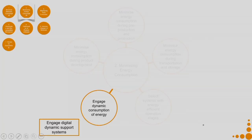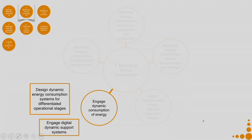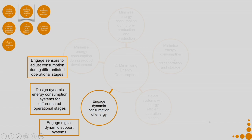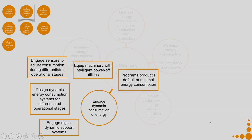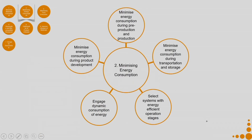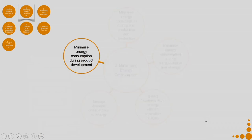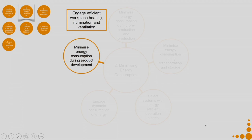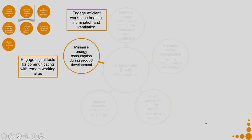Engage dynamic consumption of energy: engage digital dynamic support systems, design dynamic energy consumption systems for differentiated operational stages, engage sensors to adjust consumption during differentiated operational stages, equip machinery with intelligent power utilities, and program products' default at minimal energy consumption. For minimize energy consumption during product development: engage efficient workplace heating, illumination, and ventilation, and engage digital tools for communicating with remote working sites.